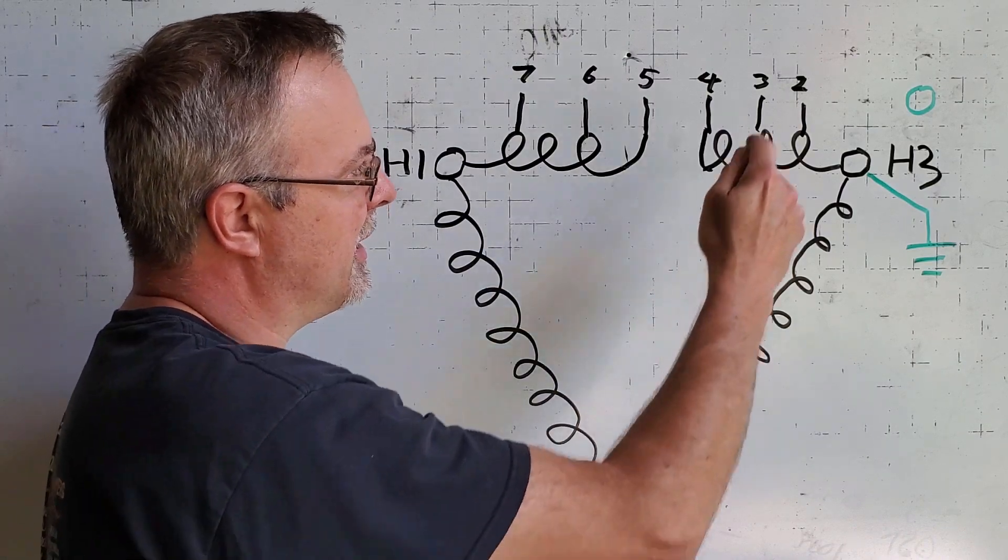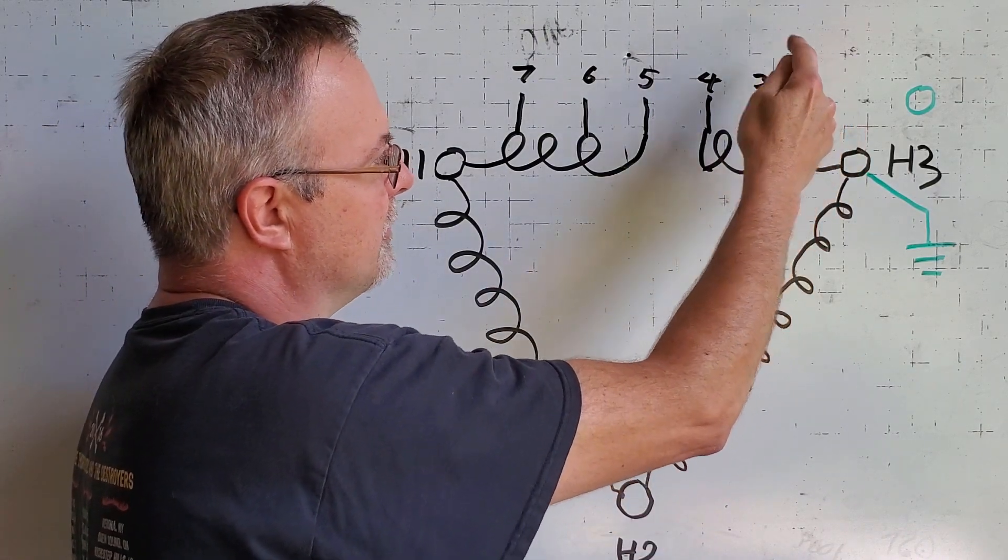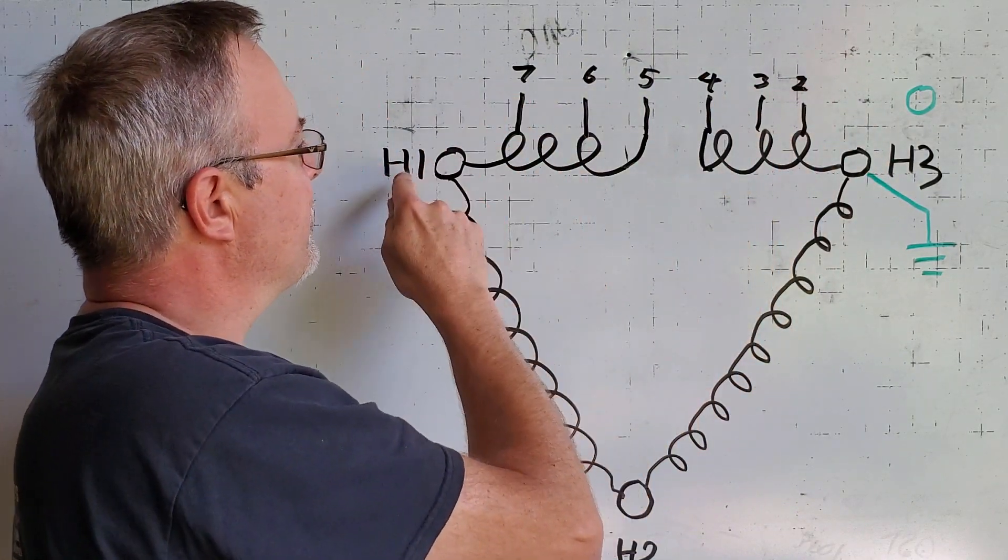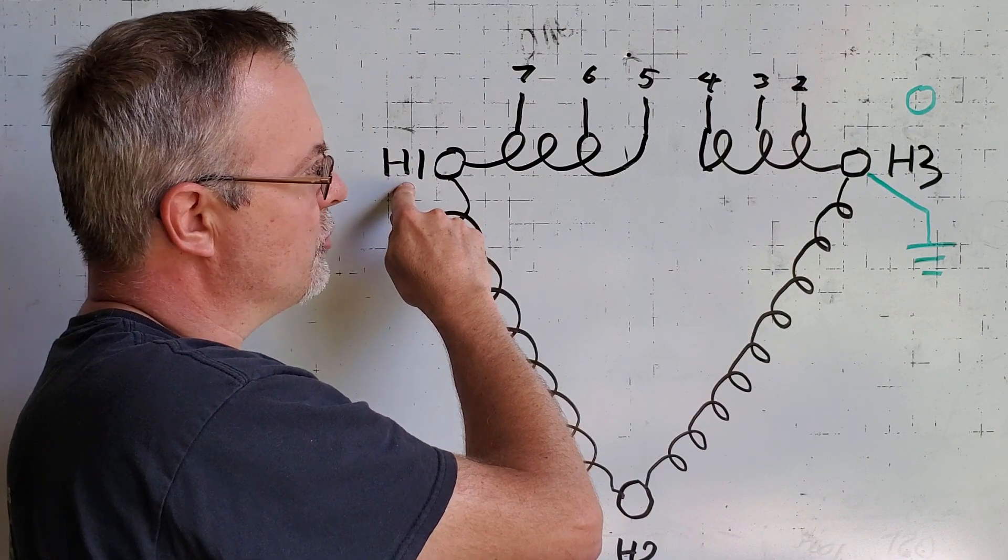What we're going to do is we're going to apply the 120 volts to the low voltage side and I'm going to call out the voltages and we're going to write them down here from zero on up through to the high leg of H1. So let's get over to the transformer and take our measurements.